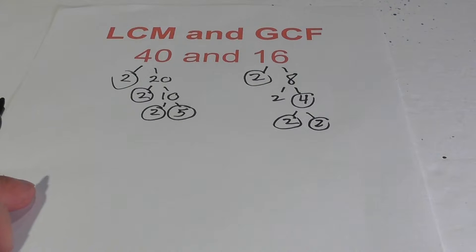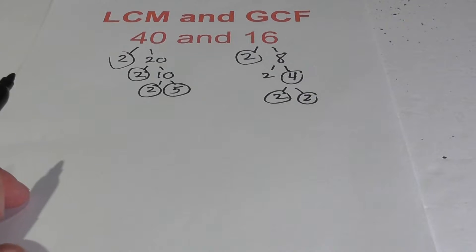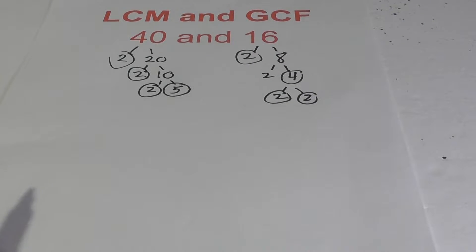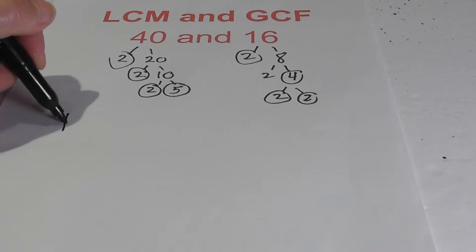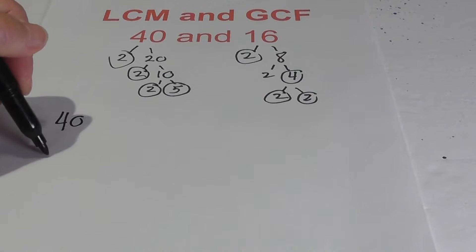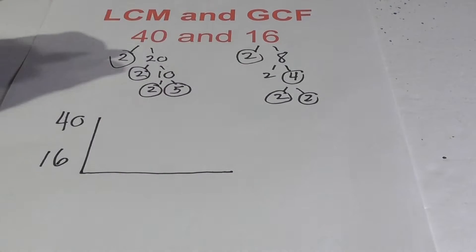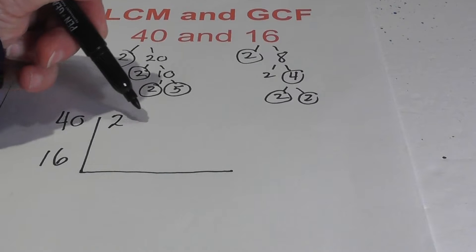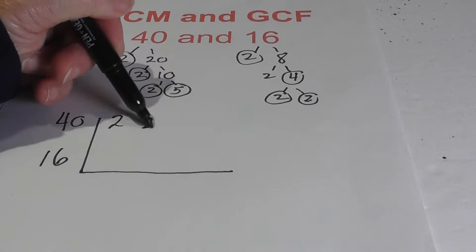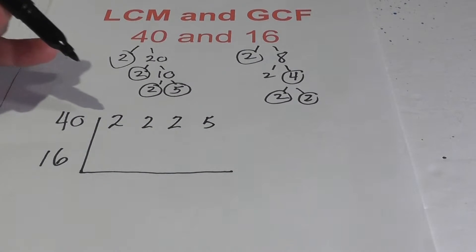Now the next thing I do is I create a chart. So let's quickly create a chart — it helps you stay organized. I'm going to write a 2, a 2, a 2, and a 5 for the prime factors of 40.